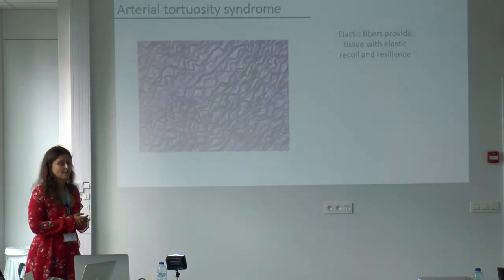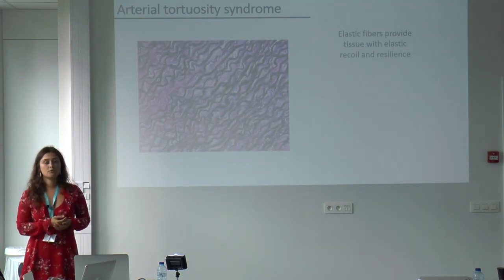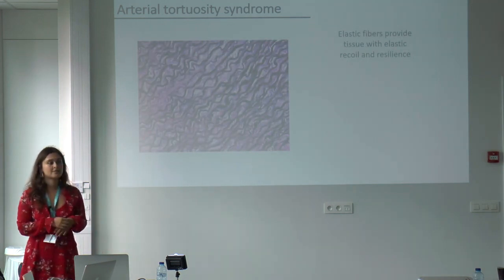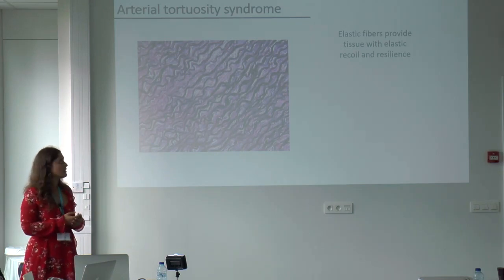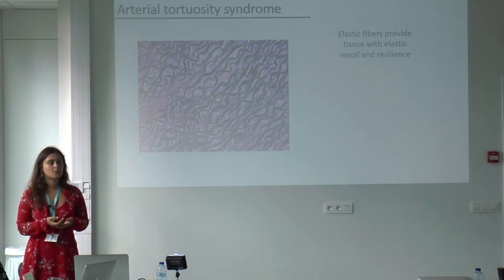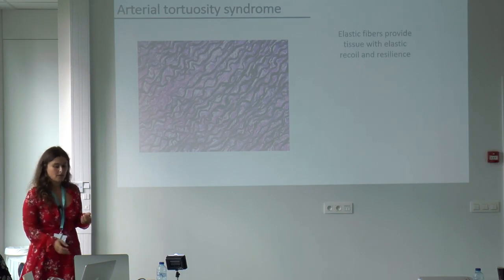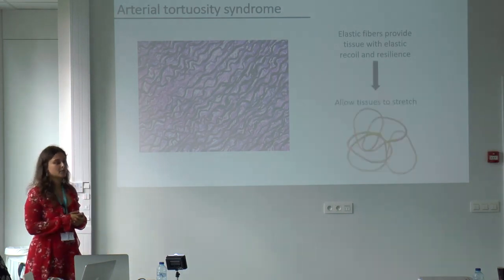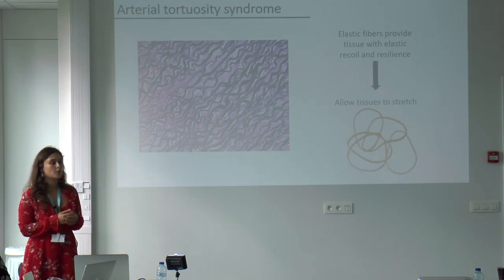What are elastic fibers? Elastic fibers can be found throughout the body in many different tissues such as the skin, the lungs, and also in the arteries. They provide these tissues with the property of elastic recoil and resilience. In fact, they allow the tissues to stretch just like a rubber band.